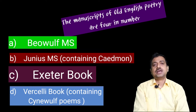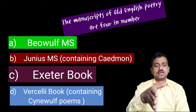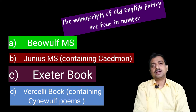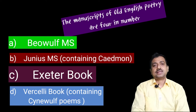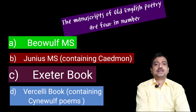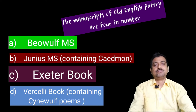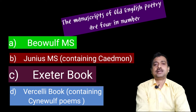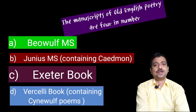The second is the Junius MS. Within that section you can find Caedmon. The third is the Exeter Book, and the fourth is notably the Vercelli Book, which contains Cynewulf's poems.